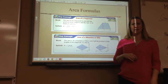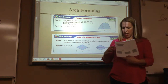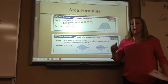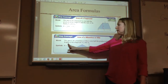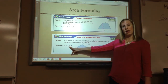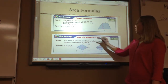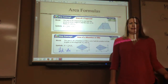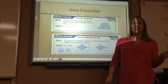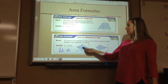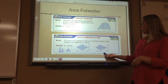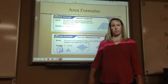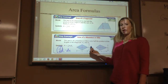Area of a rhombus and kite — you can write on your notes page. On the rhombus, you might want to go ahead and draw in the diagonals. Area of a rhombus and a kite is one-half D1 times D2. D is a diagonal — so this diagonal times this diagonal. It's the whole diagonal, same with a kite. Just multiply the diagonals and divide by two.